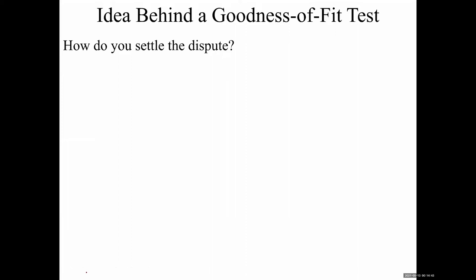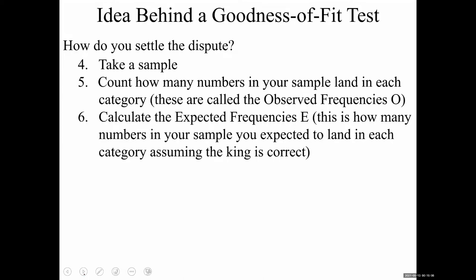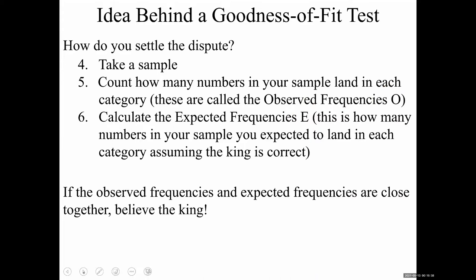To settle the dispute, you take a sample. Count how many numbers in your sample land in each category — those are the observed frequencies. Then calculate the expected frequency for each category, assuming the king's probabilities are correct. If the observed frequencies and expected frequencies are close together, you believe the king. If they're far apart, you believe the peasant.